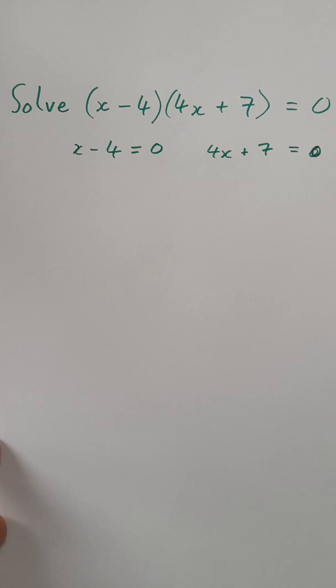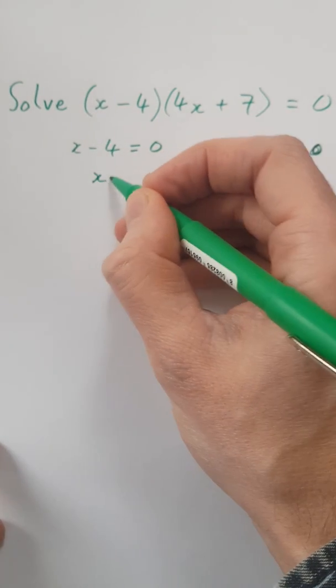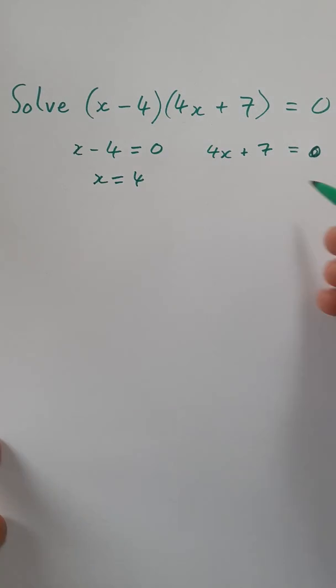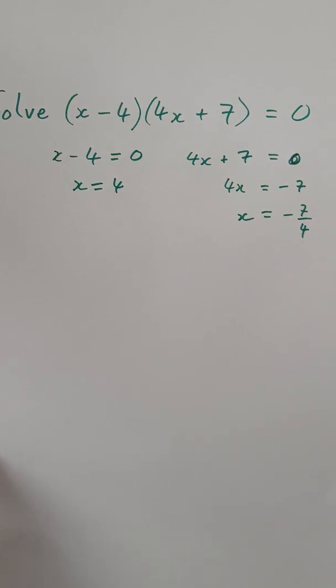Make that into a zero. This means that x equals 4. And over here, 4x will equal minus 7, and therefore x will be minus 7 over 4. And there you have your two solutions.